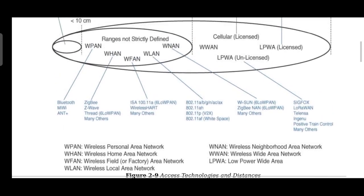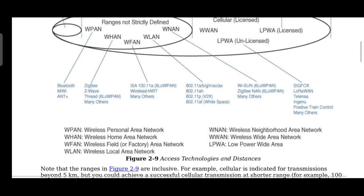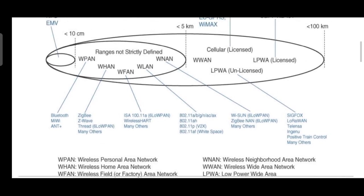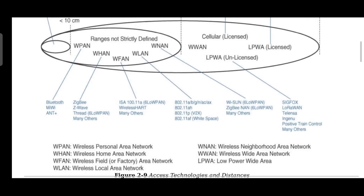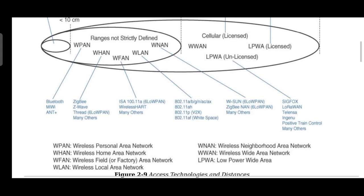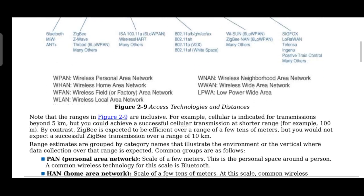The abbreviation expansions: WPAN stands for Wireless Personal Area Network, WHAN for Wireless Home Area Network, WFAN for Wireless Field Area Network, WLAN for Wireless Local Area Network, WNAN for Wireless Neighborhood Area Network, WAN for Wireless Wide Area Network, and LPWA for Low Power Wide Area Network.